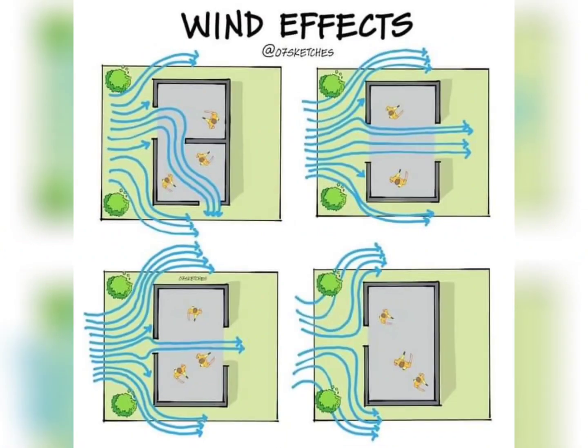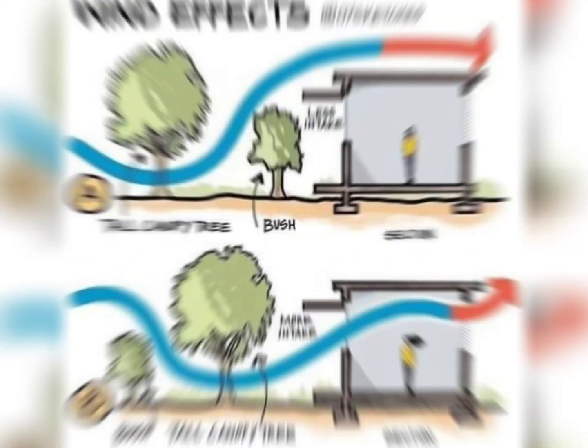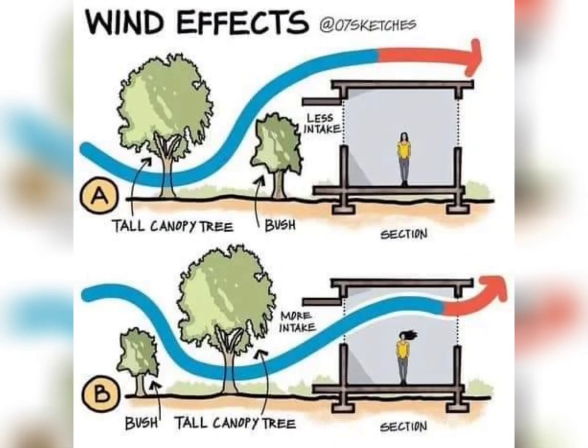This image demonstrates how tree arrangement affects wind flow and building ventilation. Scenario A shows a tall tree blocking wind, reducing airflow. Scenario B shows a bush allowing more wind, enhancing ventilation. Strategic landscaping can optimize natural ventilation for a comfortable and energy-efficient living space.